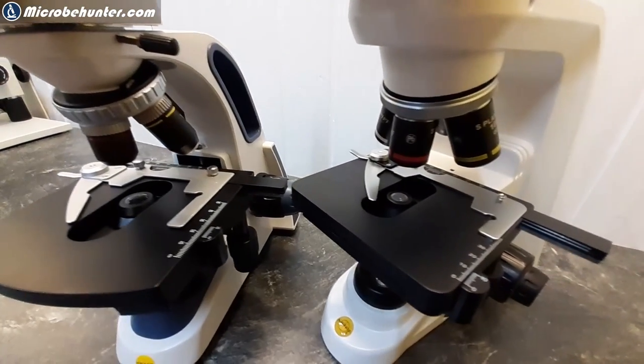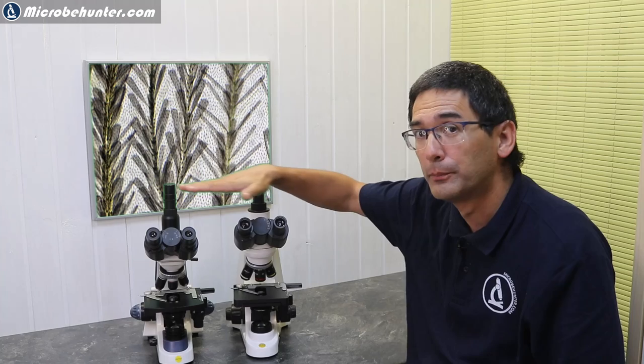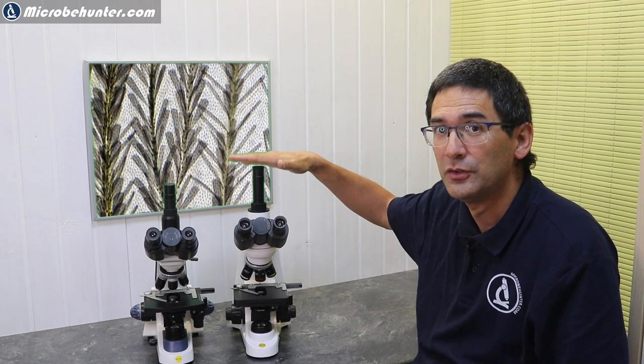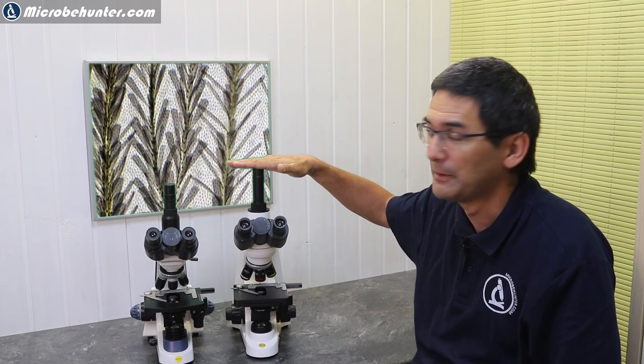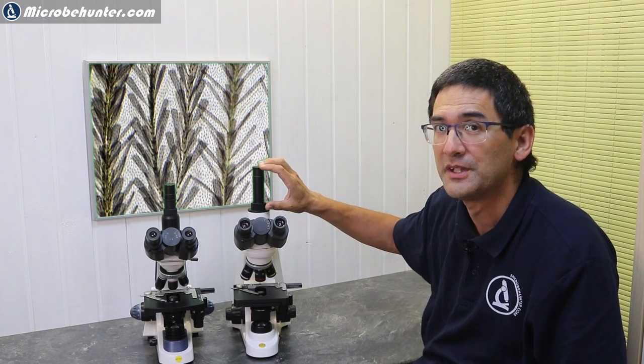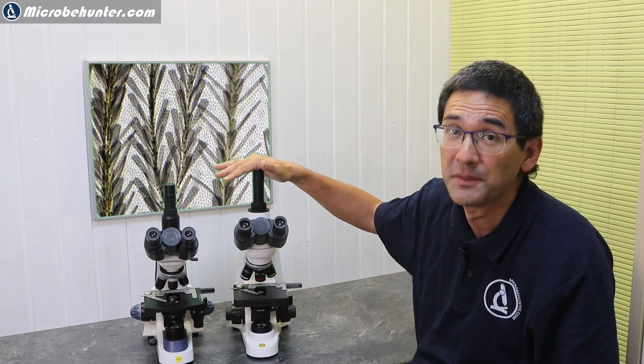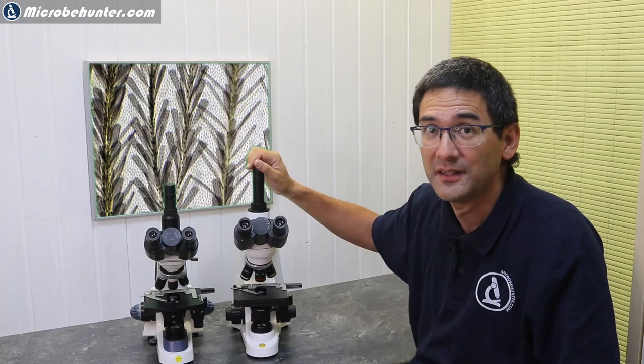The first thing that you notice is that while both of them are pretty much very similar in size, this one here, the Stellar One, is a little bit taller because the photo tube is a little bit taller here.